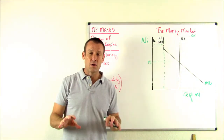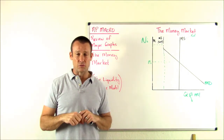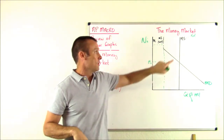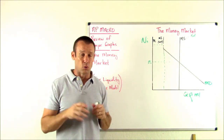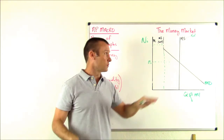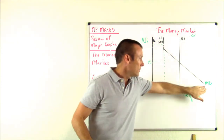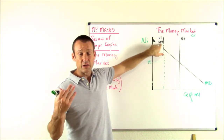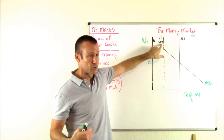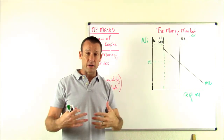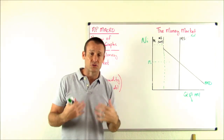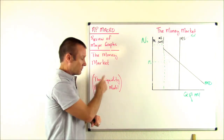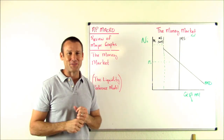So here we go — five things that shift those curves. Only one thing shifts the money supply: the Fed and its three tools. Four things shift money demand: price level, national income or real GDP, credit card usage, and technological change. That's the money market, otherwise known as the liquidity preference model. We'll see you in the next video.